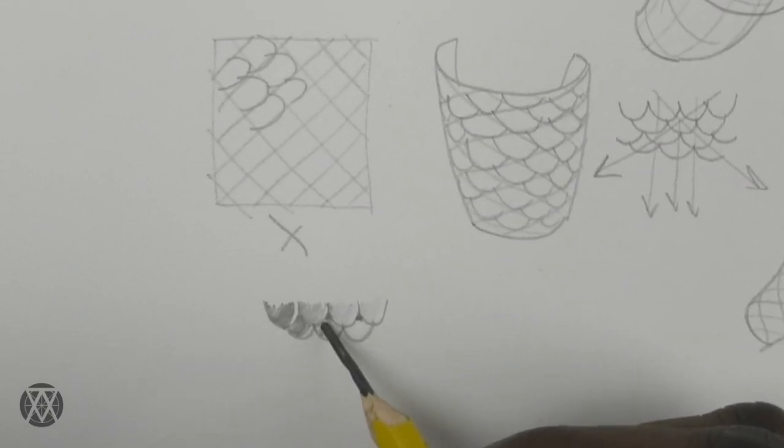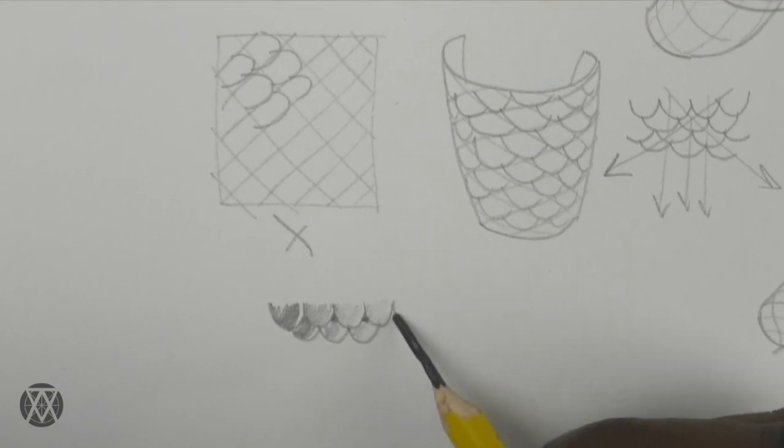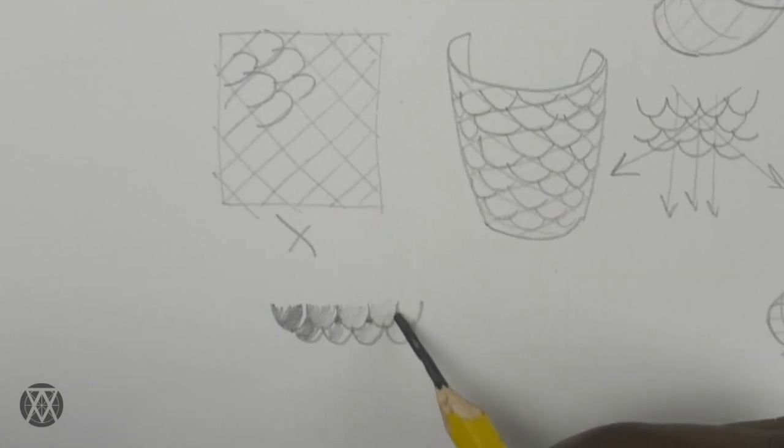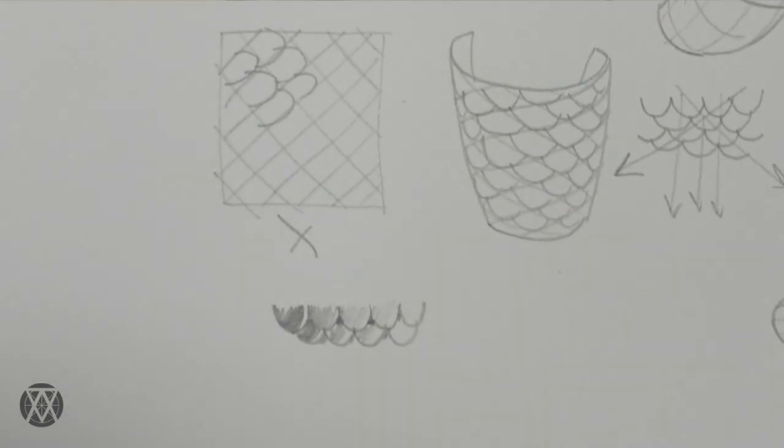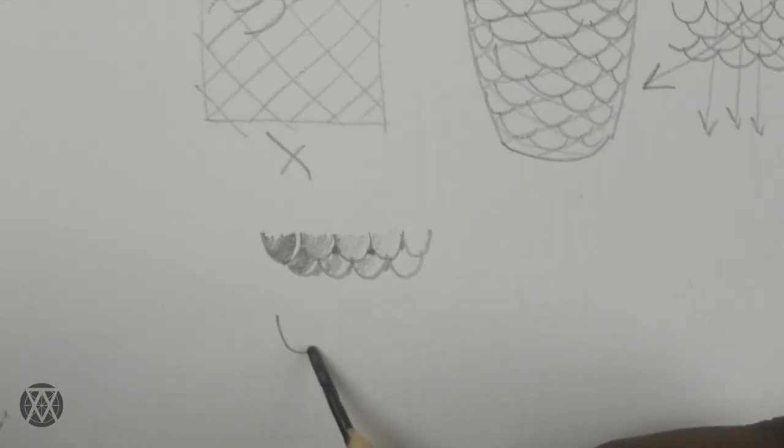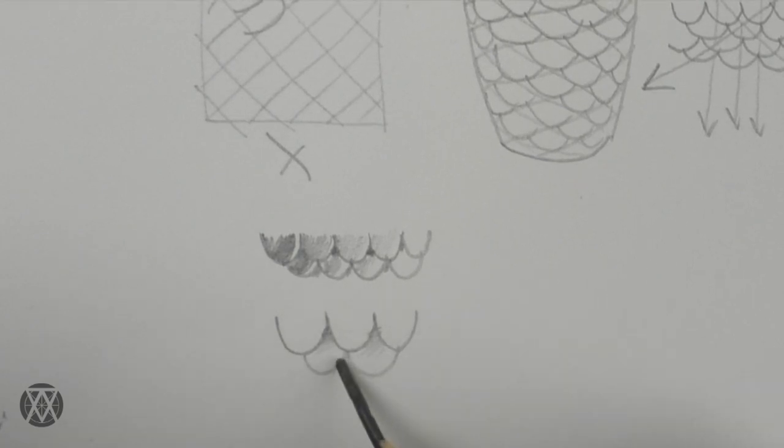The next thing is, remember that as a form turns from light to shadow, different parts of it will receive different amounts of light. For the scales that cover that form, the same effect will apply. Scales will receive different amounts of light based on where in the form they are.